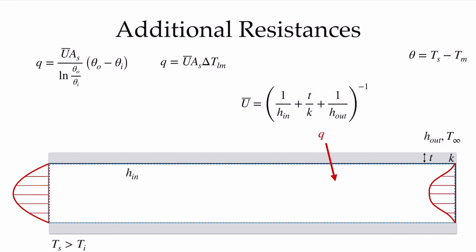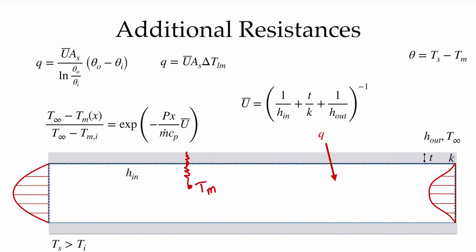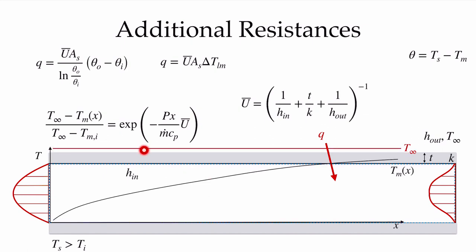The overall heat transfer coefficient U-bar is the inverse of the total area-specific resistance. The resistance network includes: an internal convection resistance, a conduction resistance through the insulation (t/k), and an external convection resistance. Taking the inverse gives U-bar. Substituting U-bar in place of h-bar in all our expressions allows us to handle this situation — with the ambient temperature as the constant outer temperature — and calculate both the mixed mean temperature at any location and the total heat transfer using the log mean temperature difference.